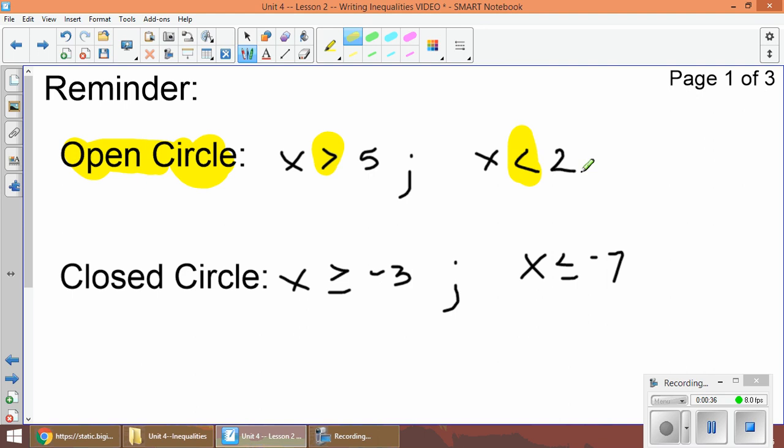Anytime we see those two signs we use an open circle to graph our solutions. The open circle simply means greater or less. And then we use the closed circle if we have greater than or equal to or less than or equal to. So when you see a closed circle that means the solution is included, and when it's an open circle that means it's got to be either bigger or smaller than the given value.